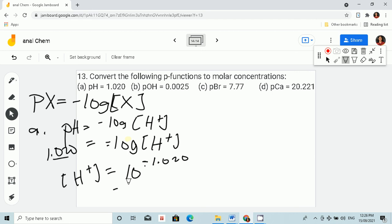So that is equal to, in a calculator, we have shift log, so we are using the 10 to the x. Negative 1.020 equals, so the concentration of H plus ion is equal to 0.0955. If your answer is this, this is correct.